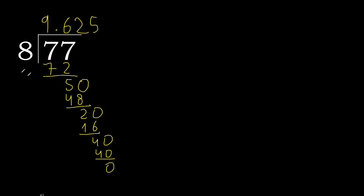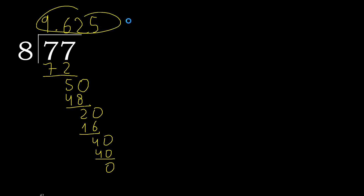Subtract — 0. Therefore finished. 77 divided by 8 is 9.625.